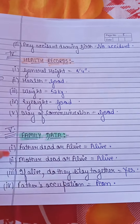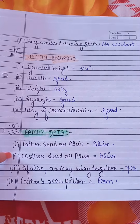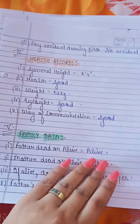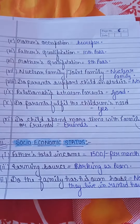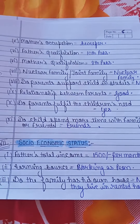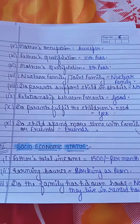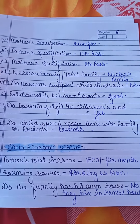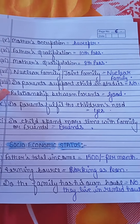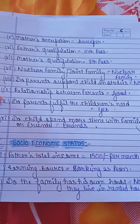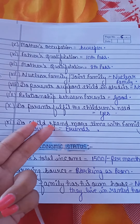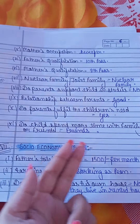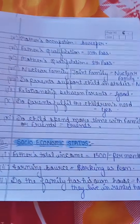Then we come to family data. Is the father dead or alive? Is the mother dead or alive? If alive, do they stay together? Then father's occupation, mother's occupation, father's qualification, mother's qualification — whether in nuclear family or joint family. Do parents support the child in studies? What is the relationship between parents? Do parents fulfill the child's needs? Does the child spend more time with family or friends? All these will be written.